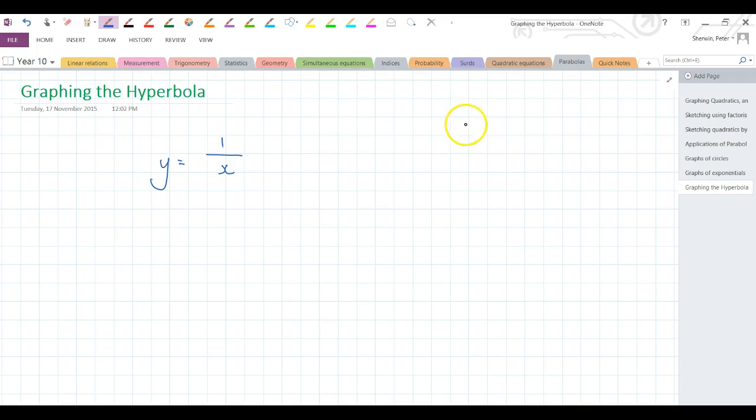All right, so we've looked at, just to take you back, we've looked at these ones, which resulted in those. We looked at these ones, which resulted in these. This was exponential, this is quadratics, parabolas. We had a look at x squared plus y squared equals something, which resulted in these. And now we're having a look at what this results in. 1 over x.